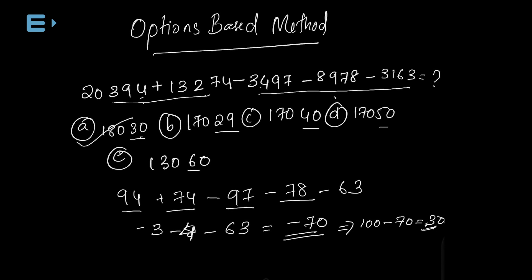If we consider the last two digits, we can subtract the value in the last two digits of the result from the options. By matching the last two digits, you can select the answer. This is the option-based method.